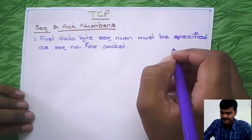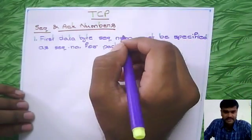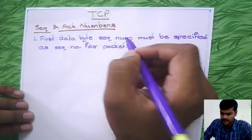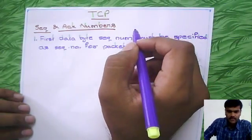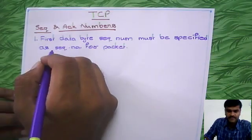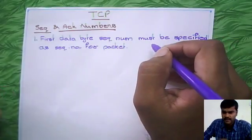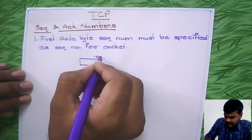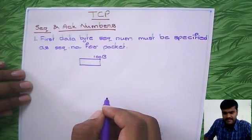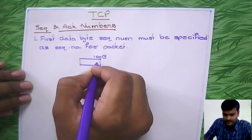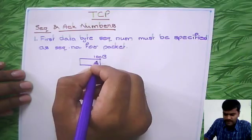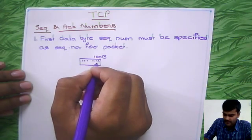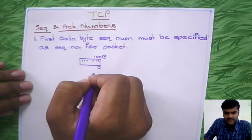Continuing the TCP header discussion, the next fields are sequence numbers and acknowledgment numbers. These are 32-bit long numbers. Inside a TCP packet, suppose its length is 100 bytes — for each byte we have one sequence number, as we already seen in characteristics. This is supposedly starting with sequence number zero.